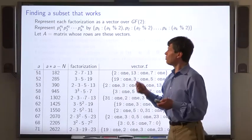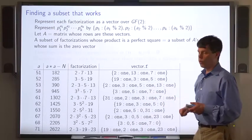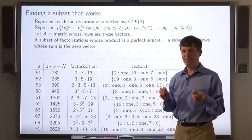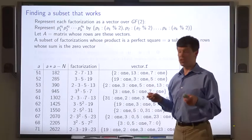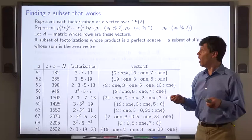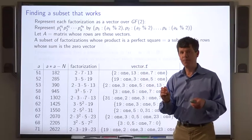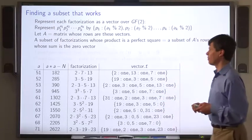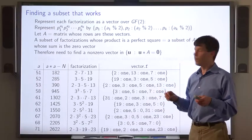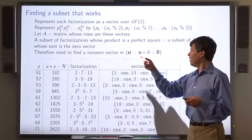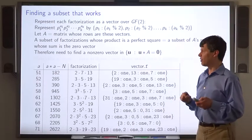Let A be the matrix whose rows are these vectors over GF2. What we want to do is find a subset of those factorizations whose product is a perfect square and that corresponds to a subset of the rows of A whose sum is the 0 vector. We need to find a non-zero vector in the set of vectors u such that u times A equals the 0 vector.